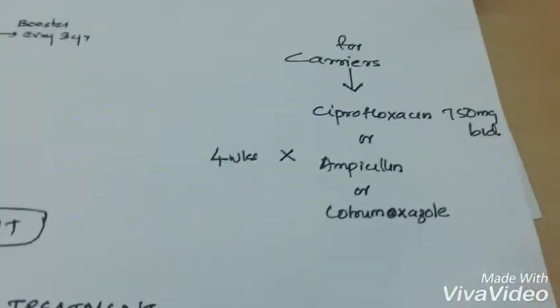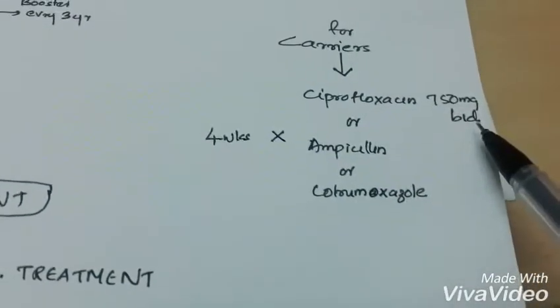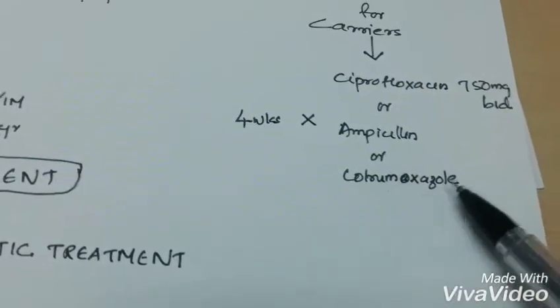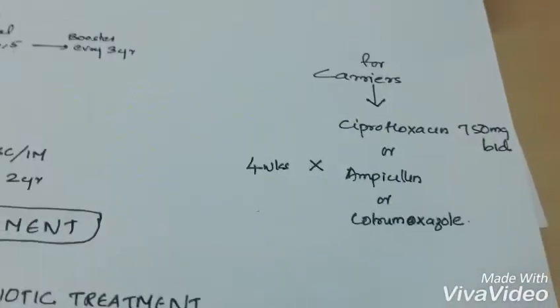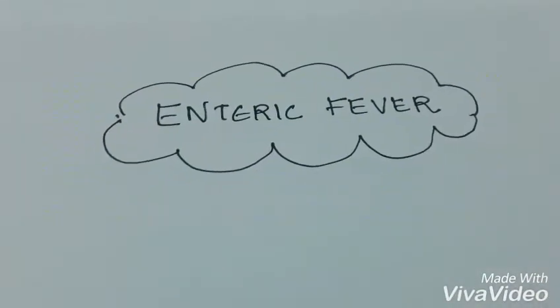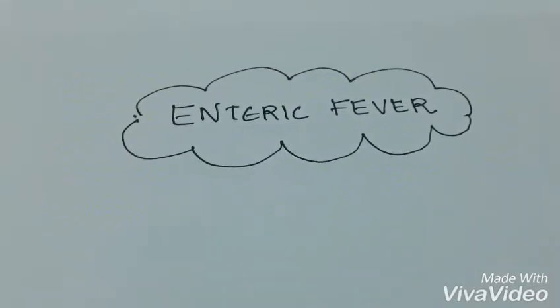For carriers, we give ciprofloxacin 750 mg BID or ampicillin or co-trimoxazole for 4 weeks. Thank you, learn and share.